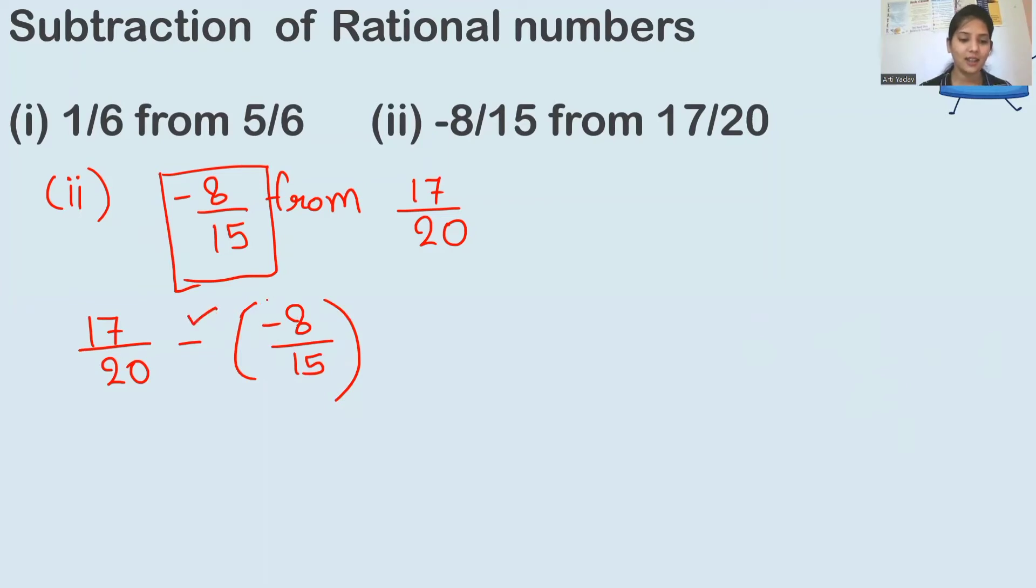First, if the bracket is used, there are two signs together - a negative sign here and a negative sign here. So firstly we will solve it and deal with it first. 17 upon 20 and negative and negative becomes positive sign. This is 8 upon 15.